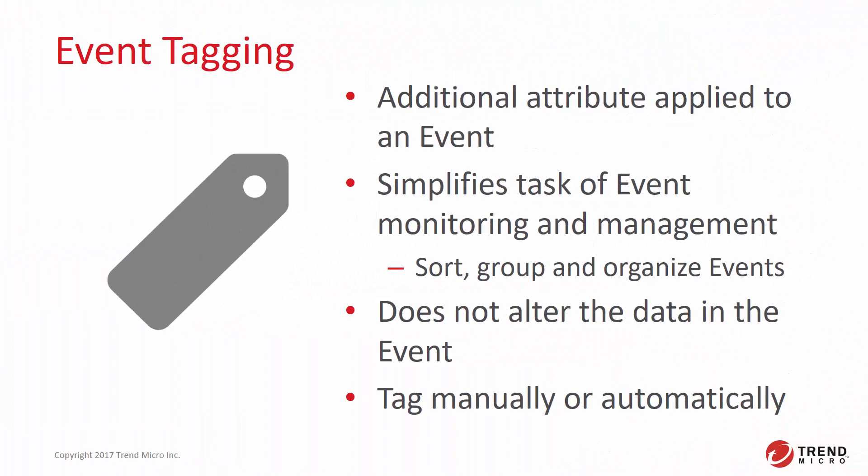To help identify Integrity Monitoring events and other events in Deep Security, tags can be assigned to the event details. A tag is an attribute applied to an event that will help simplify the management and monitoring of these events. For example, you can sort, group, print reports, and do other activities based on the tags assigned to different events. Note that the tag does not actually alter the data in the event — it's a piece of metadata assigned to the event details. You can tag events manually, or use the automatic tagging capabilities to assign tags to similar events.